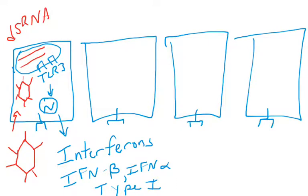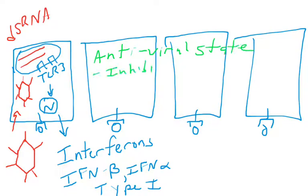Where are interferons going to go? They're going to bind interferon receptors on neighboring cells. Cells 2, 3, and 4, they're not infected. They're going to get a signal via interferons alpha and beta. When interferons bind the interferon receptor on uninfected cell, it puts these cells in what we're going to call an antiviral state.